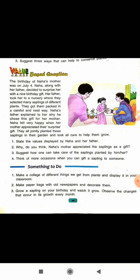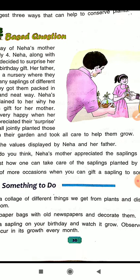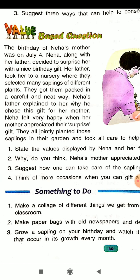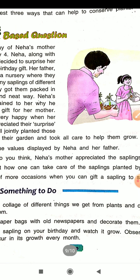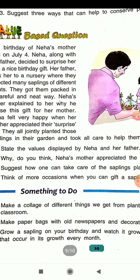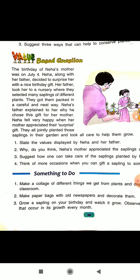Neha's father explained to her why he chose this gift for her mother. Neha felt very happy when her mother appreciated their gift. They all jointly planted those saplings in their garden and took all care to help them grow. This is the passage, and in this passage there are four questions.